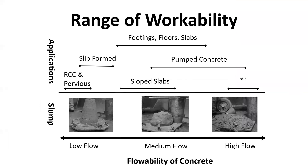There are lots of different ranges depending on the application. For slip form paving, you might be somewhere between zero and two inches — an inch to an inch and a quarter is super common. For footings, floor slabs, or elevated slabs, I've seen it as low as two or three inches and all the way up to eight inches. A lot of times it's the preference of the contractor and the equipment being used. For pumped concrete, you really don't want to pump under a four inch slump if you can help it — four to eight inch slump is pretty common for pump concrete.